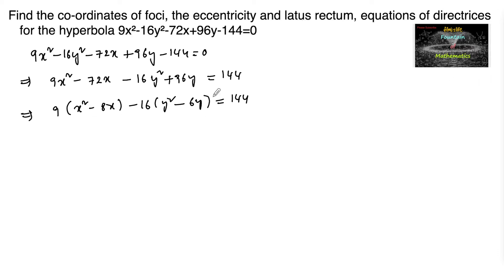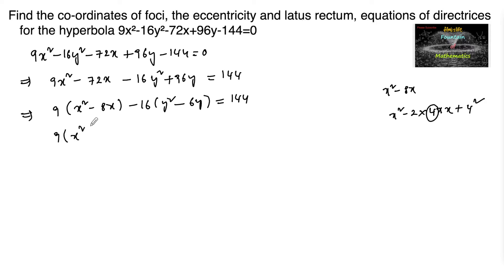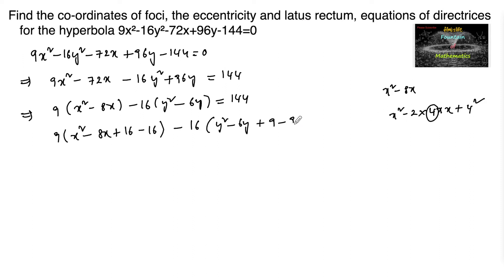Here x² - 8x is in the form x² - 2(4)x, so 4² = 16 should be added and subtracted inside the bracket: x² - 8x + 16 - 16. Similarly for y² - 6y, we have 2×3×y, so add and subtract 3² = 9, giving plus 9 minus 9, equal to 144.